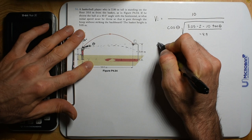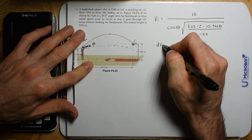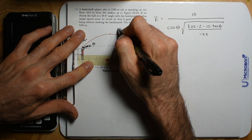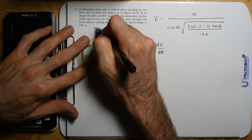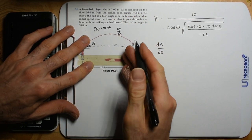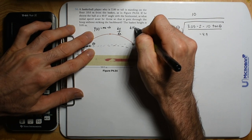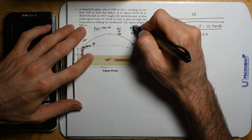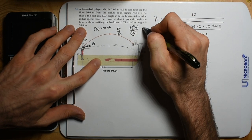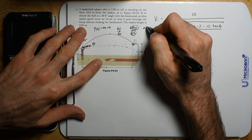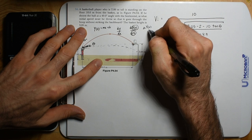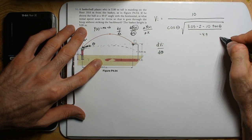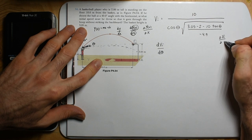We take the derivative of this equation. The derivative is the change in initial velocity with respect to theta — dVi/dθ. This is the same concept as taking dy/dx of a function y(x) = mx + b. We're looking at the change in function y(x) divided by the change in x. For our function, it's the change in initial velocity divided by the change in angle.